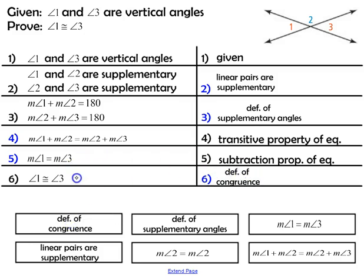Segments are congruent when their measures are equal to each other. This is how you complete a two-column proof when you're given a fill-in-the-blank with a word bank. I'll see you in class for more practice with proofs.